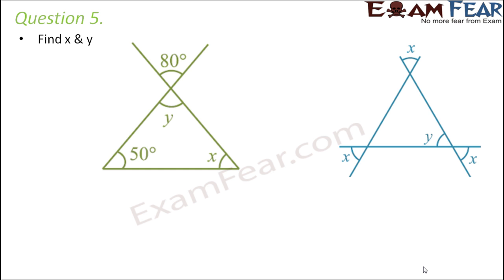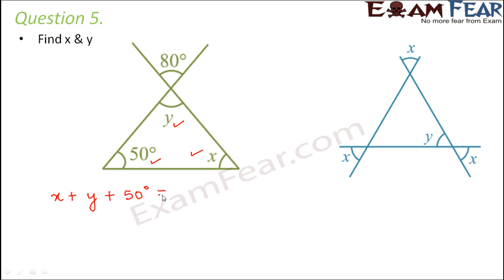Question number 5: here we have slightly more complicated figures. We need to find x and y. In the first diagram, x, y, and 50 degrees are the interior angles of the triangle. So by the angle sum property, x plus y plus 50 degrees is equal to 180 degrees.